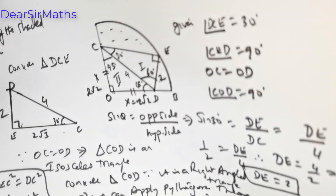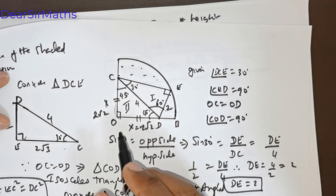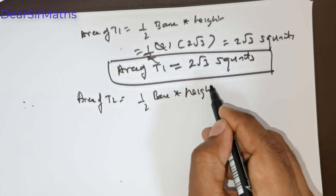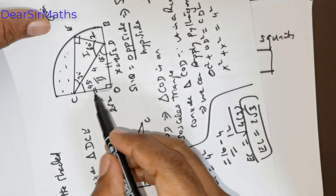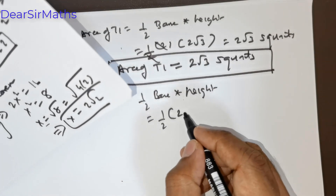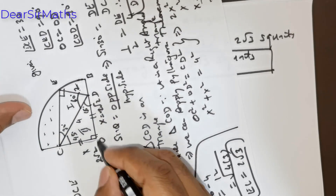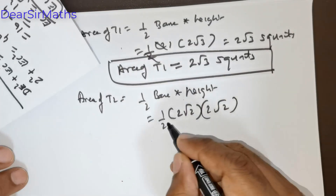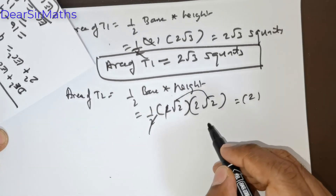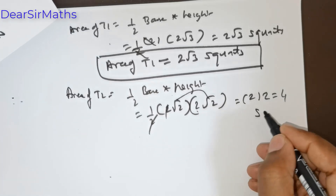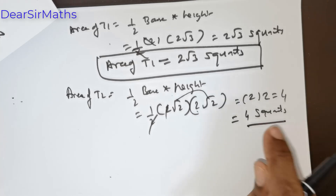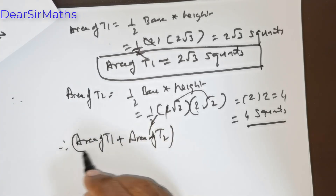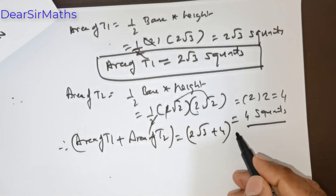Now I need to get the area of T2. Area of T2 equals half times base times height. The base is 2√2 and the height is also 2√2. So half times 2√2 times 2√2 equals half times 8 equals 4 square units. Therefore area of T1 plus area of T2 equals 2√3 plus 4 square units.